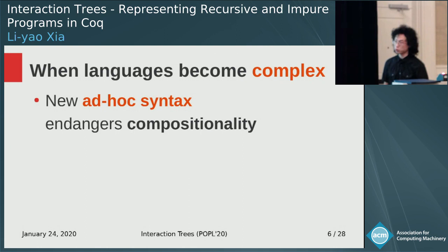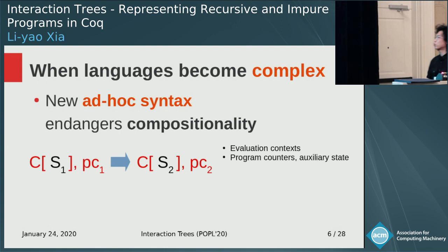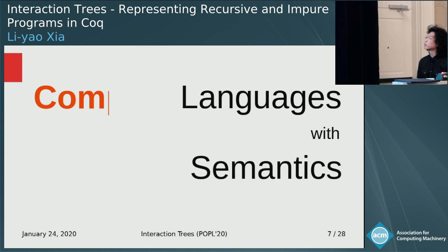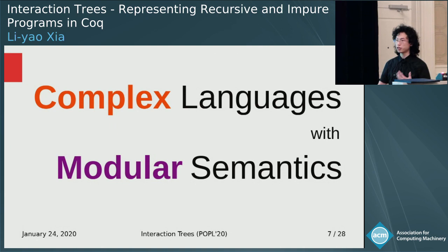When you want to model a new effect, you have to introduce new syntax — for example, evaluation contexts, program counters, traces, and exceptions. And the problem is that this way of formalizing languages is not very modular. So when your languages have more and more features, you would like to be able to express these features in a modular fashion.